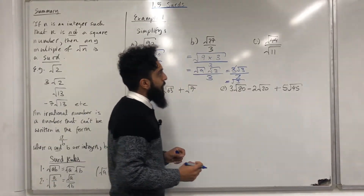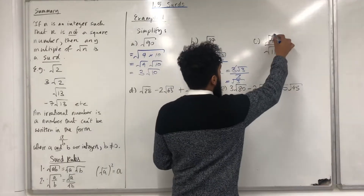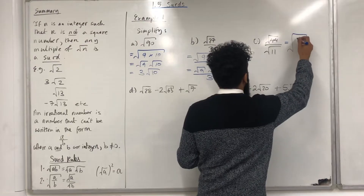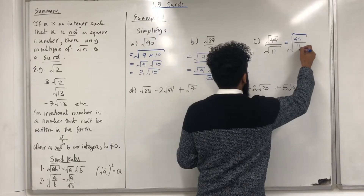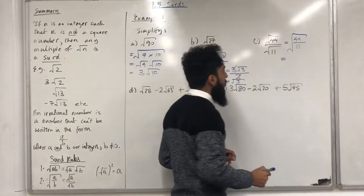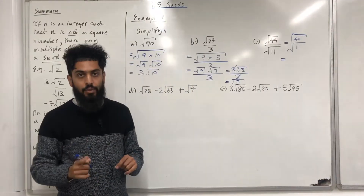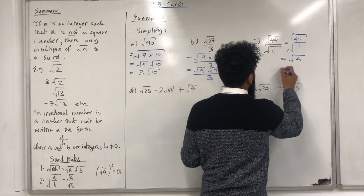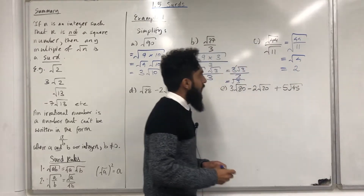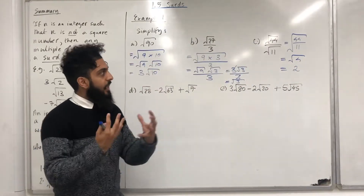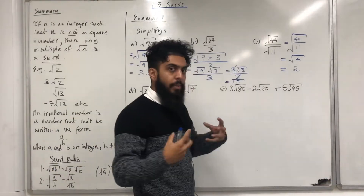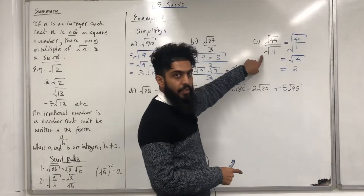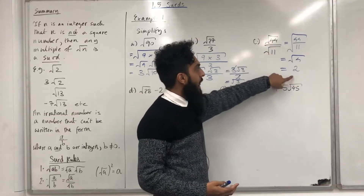Moving on to part c. We can use the division rule for surds and rewrite this as the square root of 44 over 11. Now 44 divided by 11 is just 4, so we have square root of 4, which is just 2. Another way to tackle part c is to use the multiplication rule for surds on the numerator and the denominator separately — you should still end up with 2.